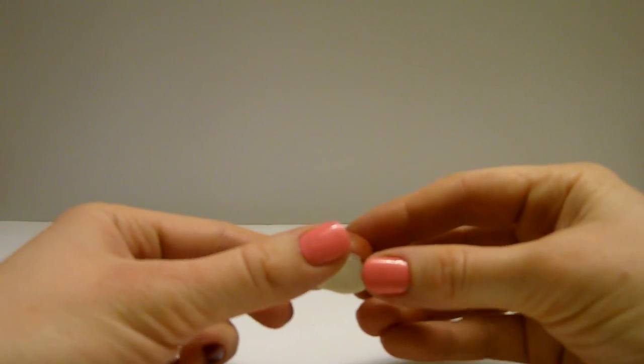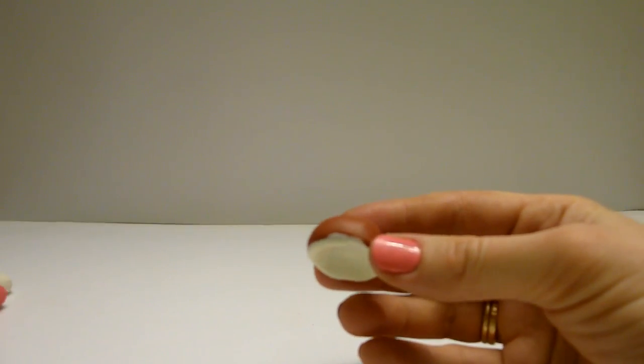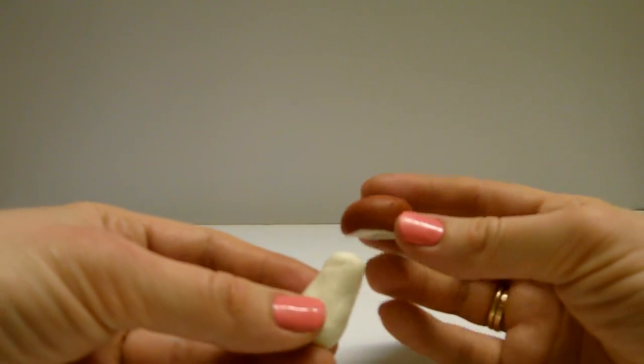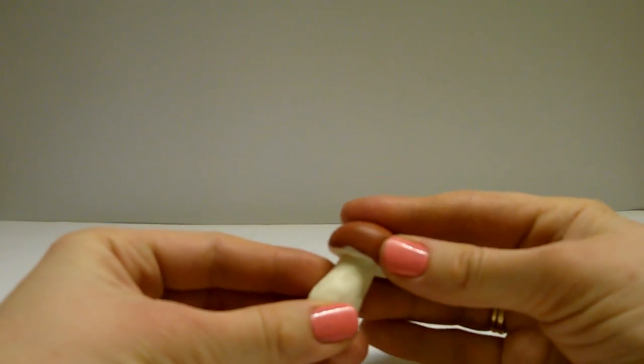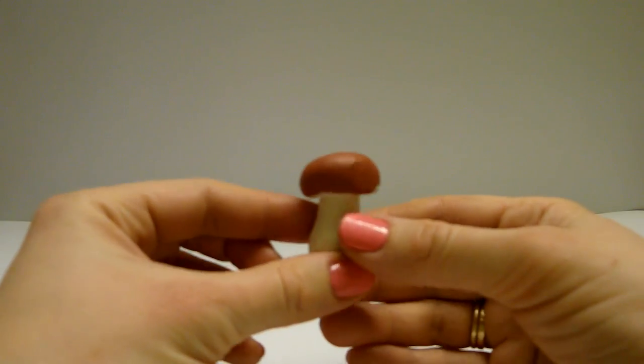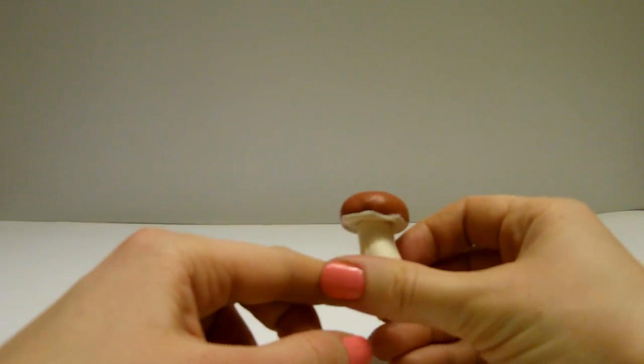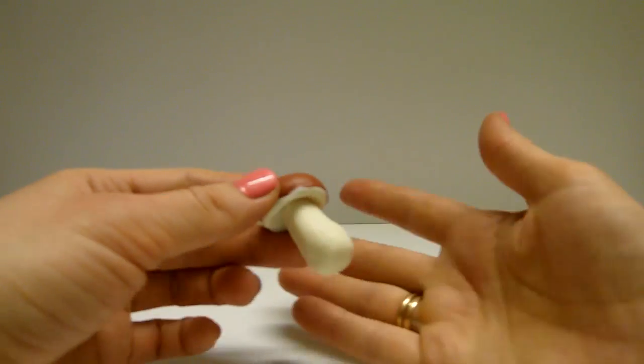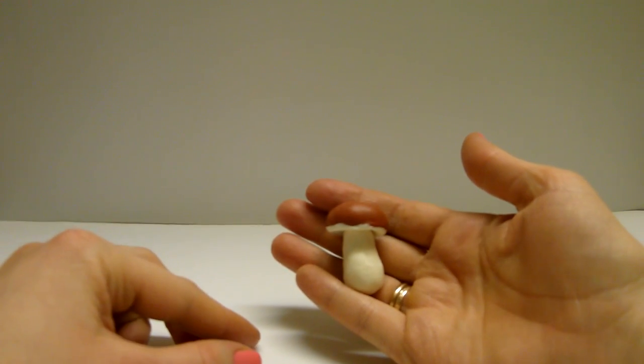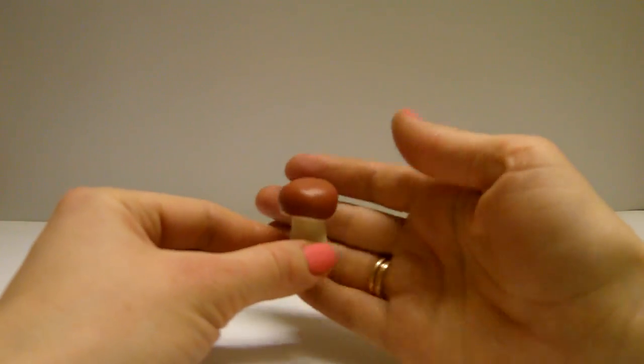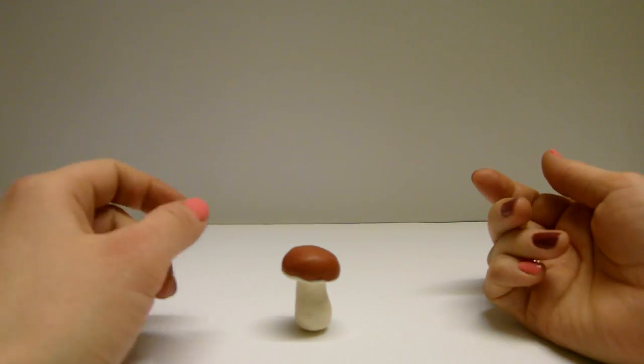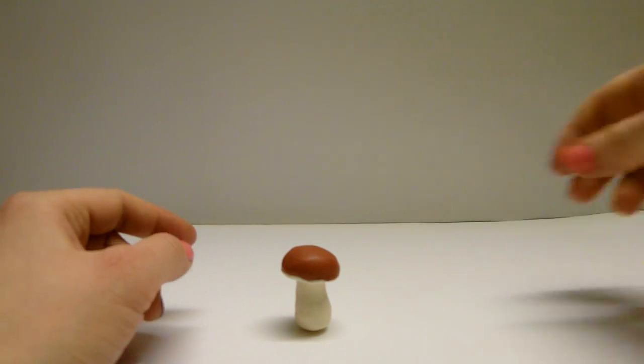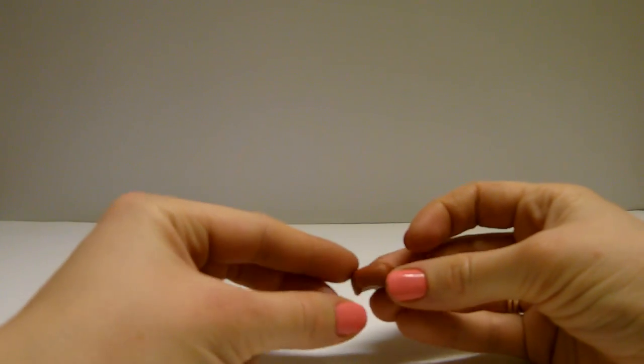Now let's stick this type. You can create a small bolitas. Take the smaller part of the brown bowl.